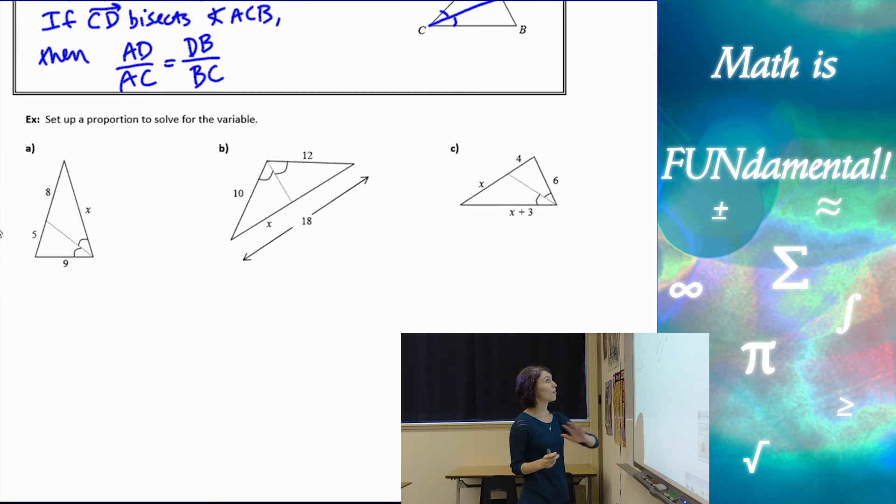So let's do this. Set up a proportion to solve for the variable. For A, we first want to make sure that we have our ray that bisects our angles, which we do. So we're good there. And then we can set up our proportion. 8 over X equals 5 over 9, and cross multiply and solve.